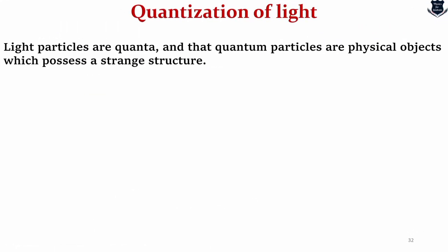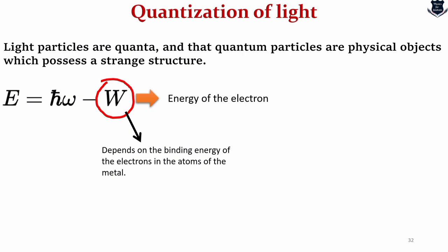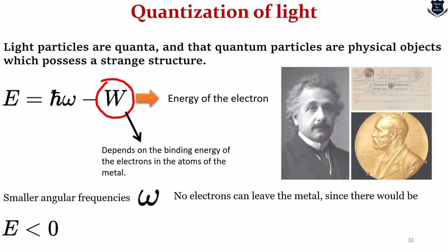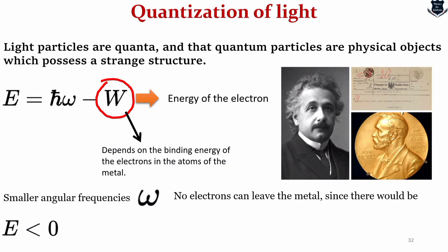Light particles are quanta and quantum particles are physical objects which possess a strange structure. If we see that the energy of the electron is given by this formula and the so-called work function is given by this, it depends upon the binding energy of the electrons of the atoms on the metal. If we take very small angular frequencies like ω, no electrons can leave the metal. Why? Because since there would be an exception that E would be less than zero and this is a contradiction. In fact, this has been observed in experiments by Millikan. It should be noticed that he found this typical constant in his experiment coincided with Planck's constant. For this, in 1921, Einstein was awarded the Nobel Prize in Physics for his services to theoretical physics and especially for his discovery of the law of photoelectric effect.